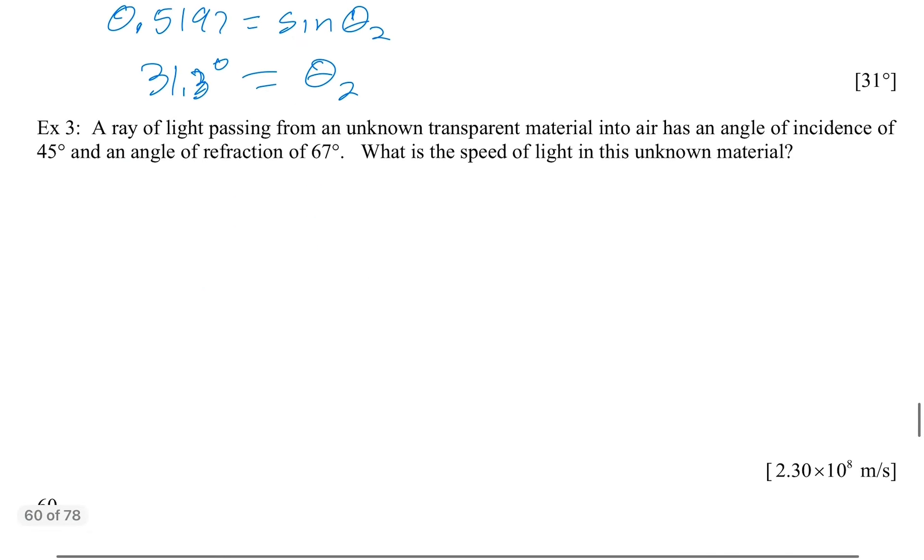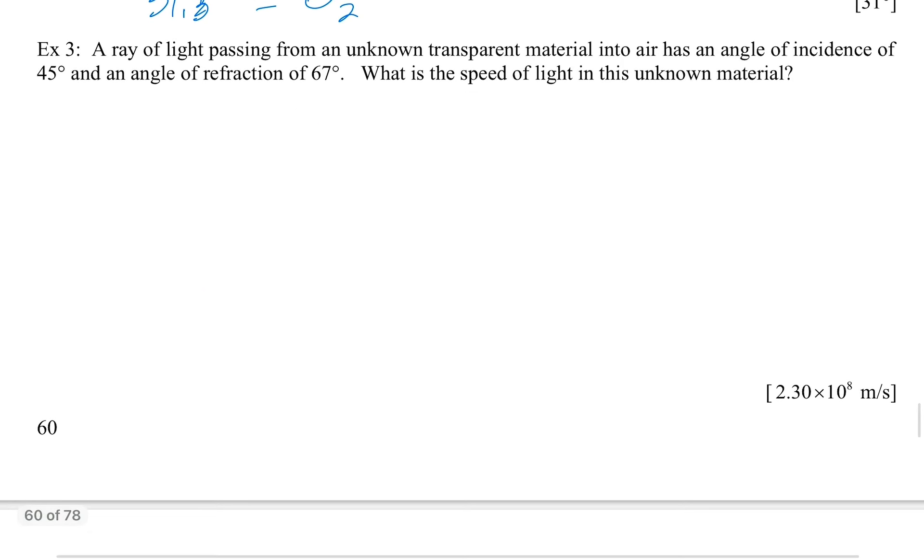Next one. A ray of light passing from an unknown transparent material into air has an angle of incidence of 45 and an angle of refraction of 67. What is the speed of light?